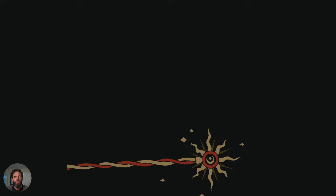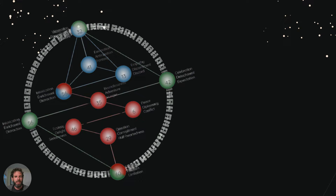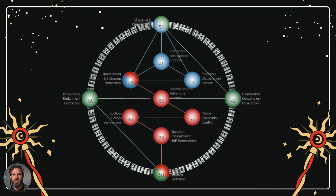Now let's talk about the Gene Keys and frequency bands. This is where the wisdom gets its namesake. And honestly, if you just ignored your profile and contemplated the keys, you'd find yourself walking the golden path without a profile. However, you can get info for each key via the book or audio, and it certainly does help to walk that path. Here we see the Gene Keys — the numbers are my specific keys, and the words are the different frequency bands. They're called the shadow, the gift, and the siddhi.